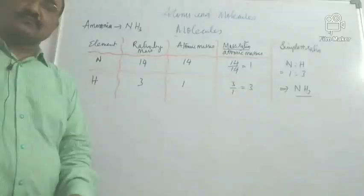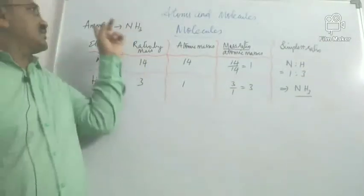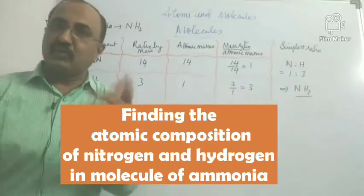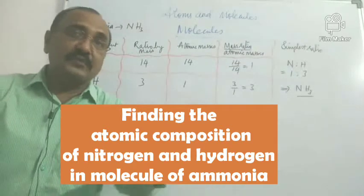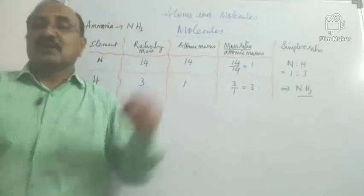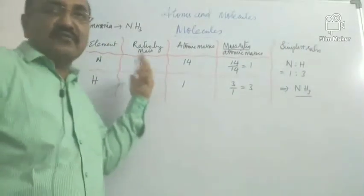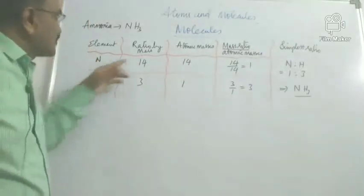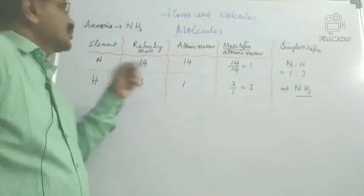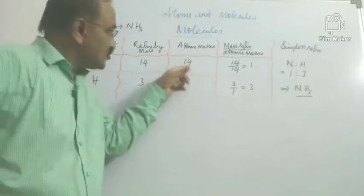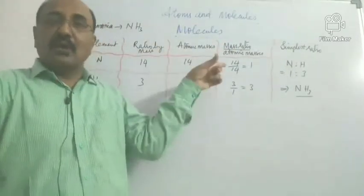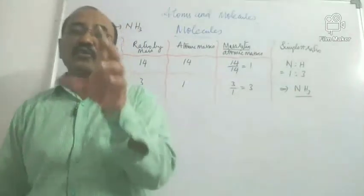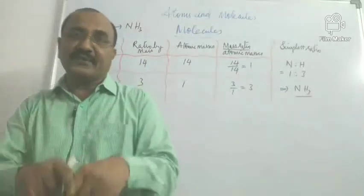Similarly, we are now trying to understand the molecular formula — the composition — of ammonia. How many atoms of nitrogen and how many atoms of hydrogen are present in each molecule of ammonia? We follow the same principle used for water. The elements forming ammonia are nitrogen and hydrogen. The ratio of mass was found to be 14 to 3. The atomic masses of nitrogen is 14 units and hydrogen is 1 unit. Dividing, I find the ratio is 1 and 3, so the ammonia molecule should have 1 atom of nitrogen and 3 atoms of hydrogen.